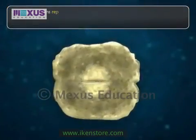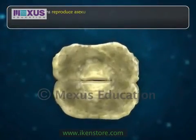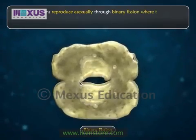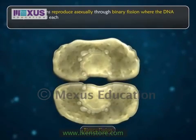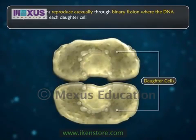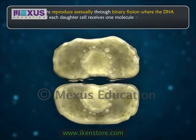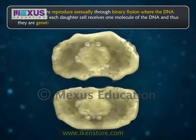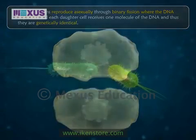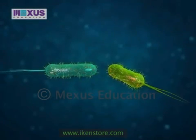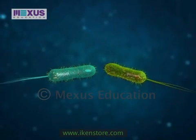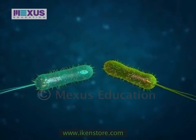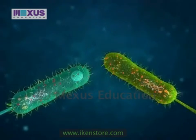Most monerans reproduce asexually through binary fission, where the DNA duplicates and each daughter cell receives one molecule of DNA, making them genetically identical. Binary fission does not allow genetic diversity, which is needed for bacteria to withstand the changing environment.